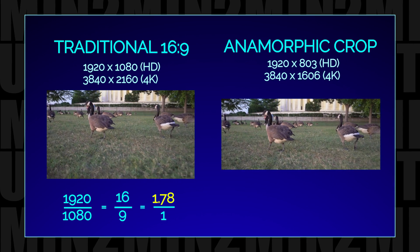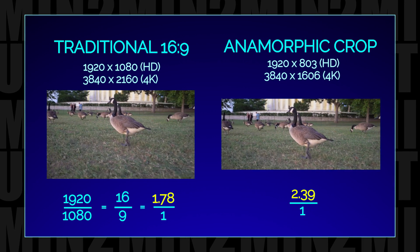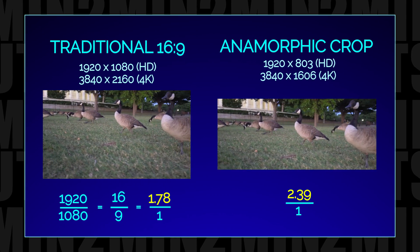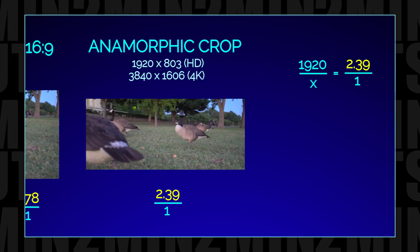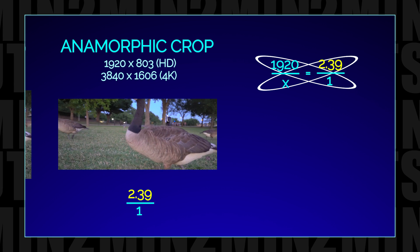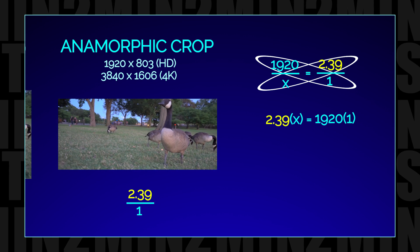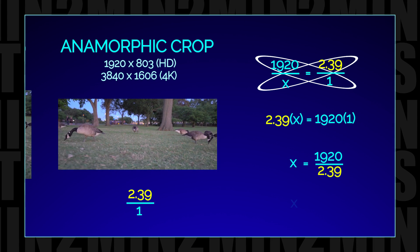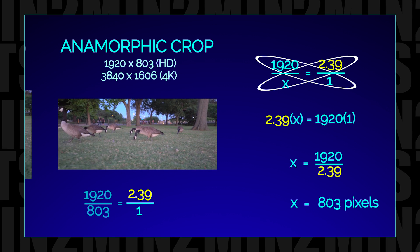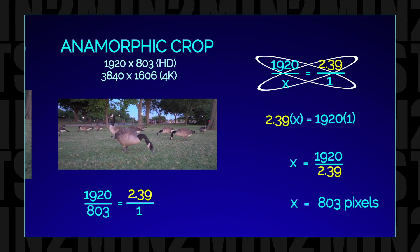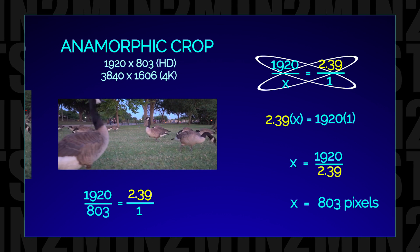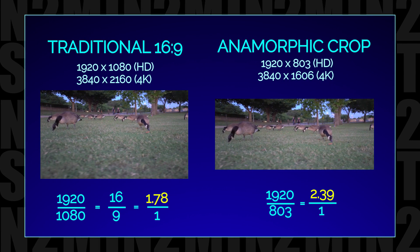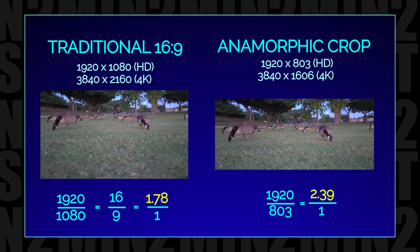What makes the anamorphic crop so special is that it uses a 2.39 to 1 pixel aspect ratio. So when we do our conversion, we will keep the same width as before and use the cross products of equivalent fractions to determine the new height. The anamorphic HD footage will have a new height of 803 pixels. You can easily create a sequence with these new dimensions to achieve the anamorphic look, or you can try out this second technique.